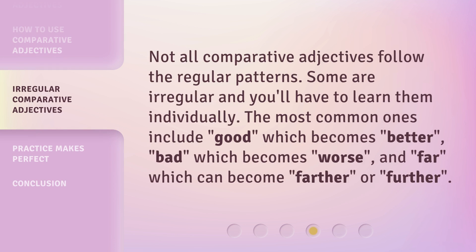Not all comparative adjectives follow the regular patterns. Some are irregular and you'll have to learn them individually. The most common ones include "good," which becomes "better"; "bad," which becomes "worse"; and "far," which can become "farther" or "further."